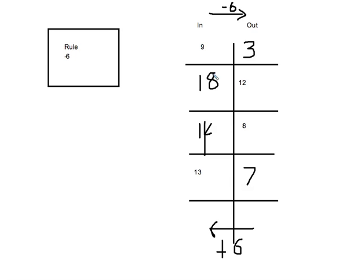Now you can always double-check. If it's a minus rule, that means when I go from in to out, I should get smaller. So the in values should be my bigs and the out values should be my smalls — big, small, big, small, all the way through. I did it correctly.